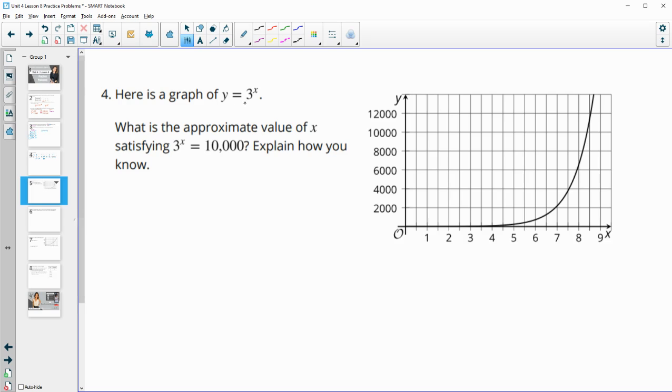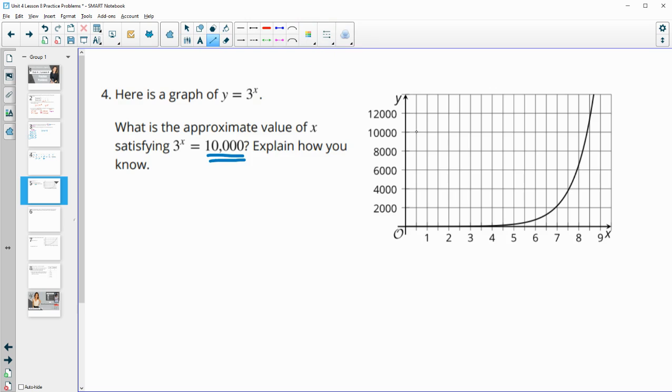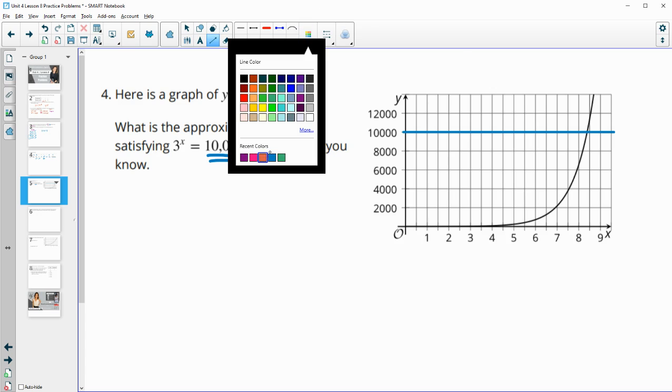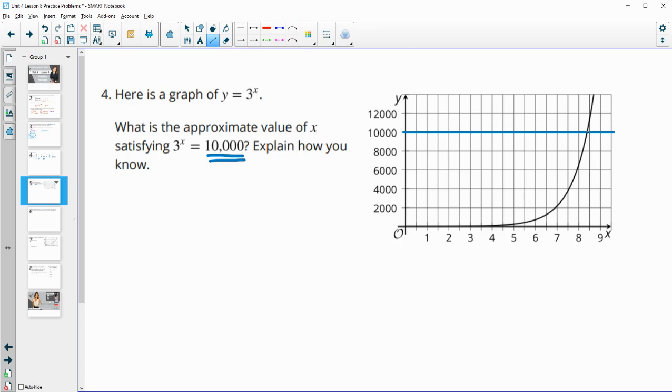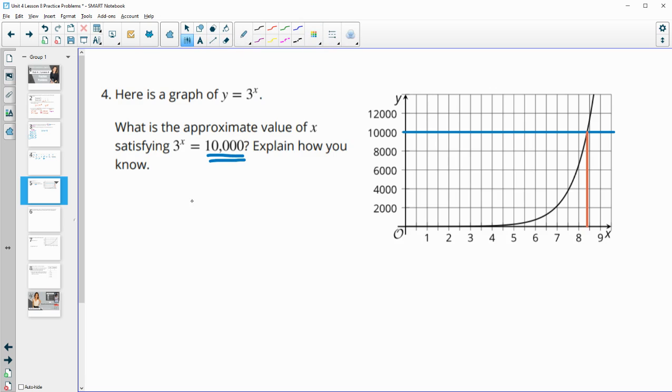Number four, here's the graph of y equals three to the x power. What is the approximate value of x that satisfies this equation? So we're going to want to look for the output to be 10,000. So let's find 10,000 on our y, and then we'll follow our graph across at the 10,000 mark to then see where this hits at the x. So here's where 10,000 hits the graph. So then we'll just follow this down to the x-axis. And we see that it's just before 8.5. So maybe you said approximately 8.4.